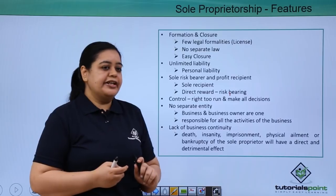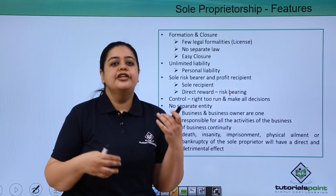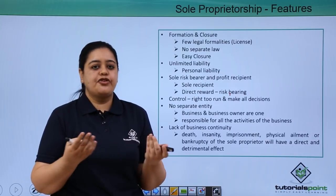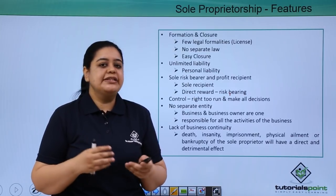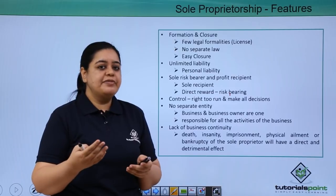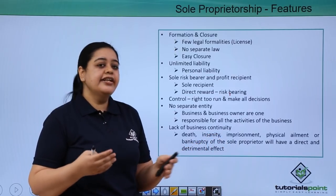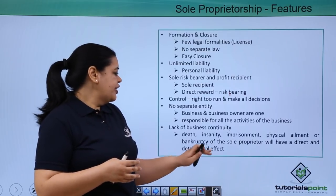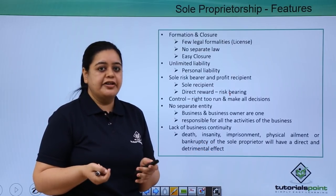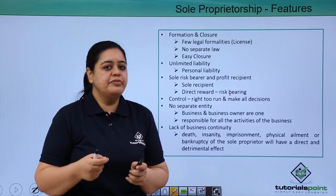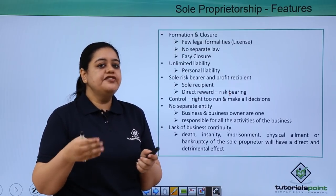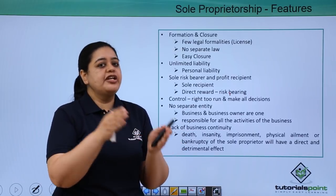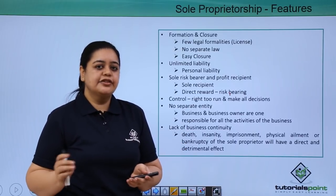Lastly, lack of business continuity. If tomorrow, unfortunately, Rama suffers an accident and dies, Rama's kitchen gets closed. The same applies if she goes insane, faces imprisonment, suffers a physical inability or ailment, or even goes bankrupt — she won't be able to continue her business. So this feature tells us that if something happens to the sole proprietor, the business gets closed.